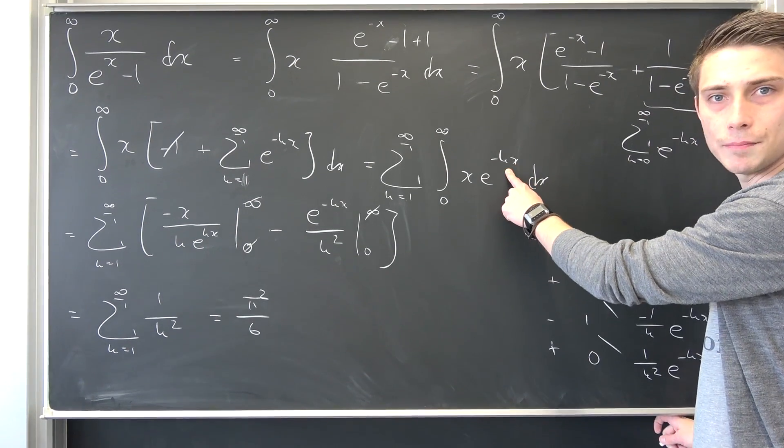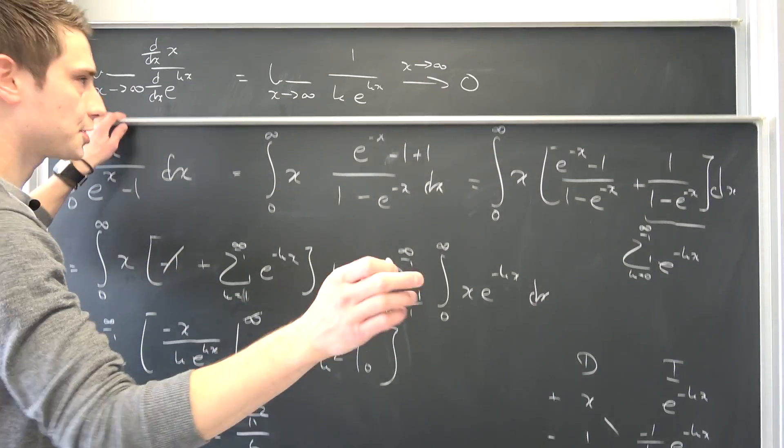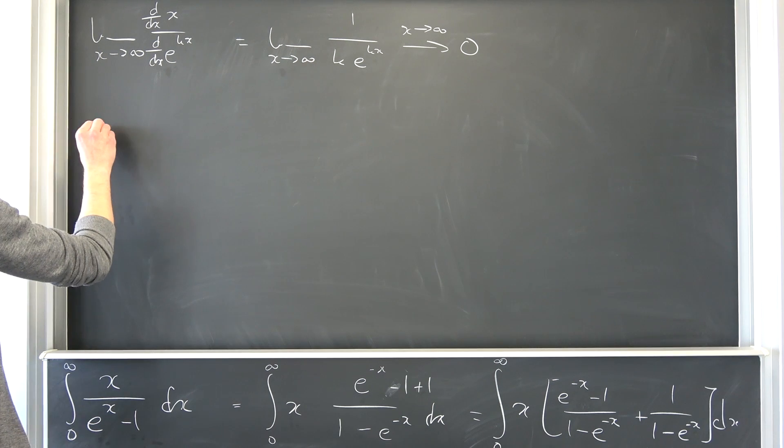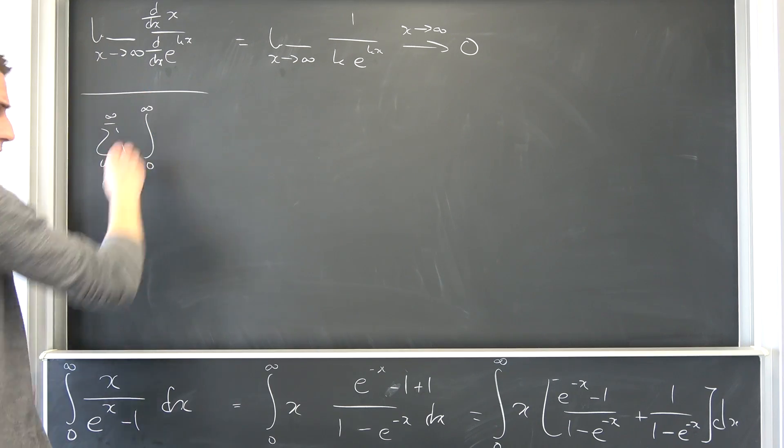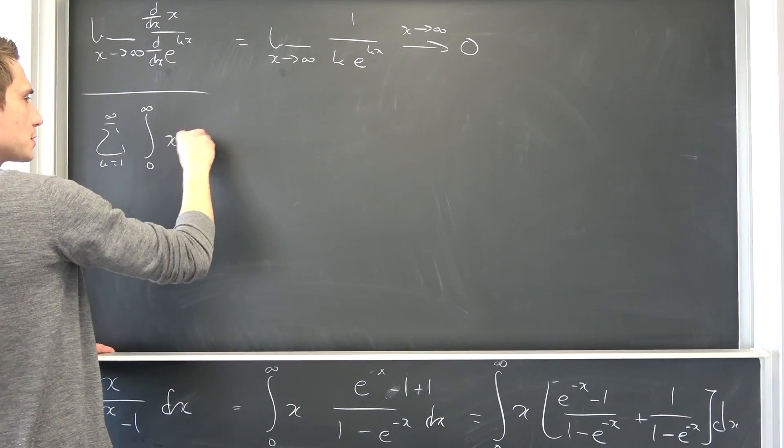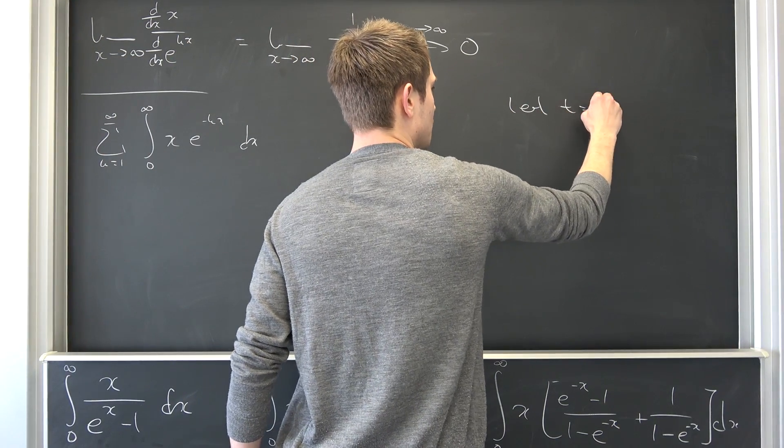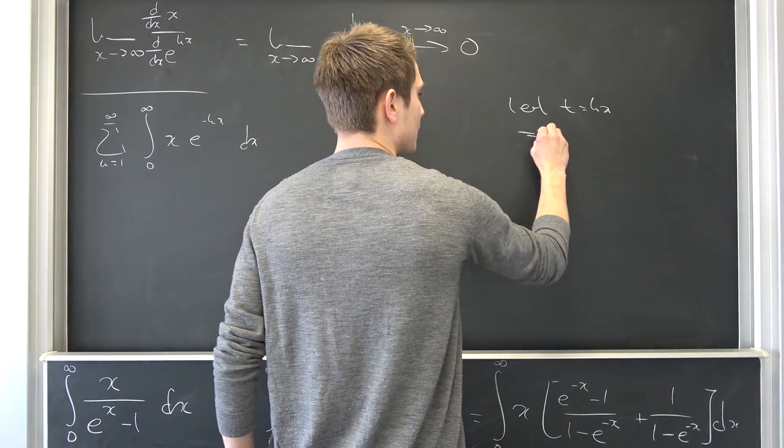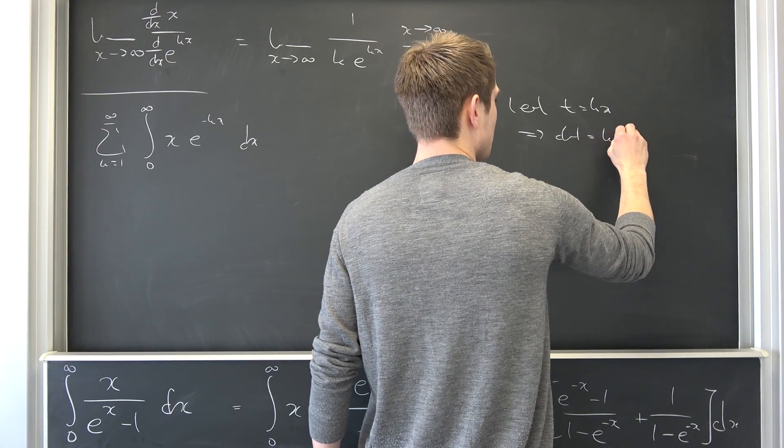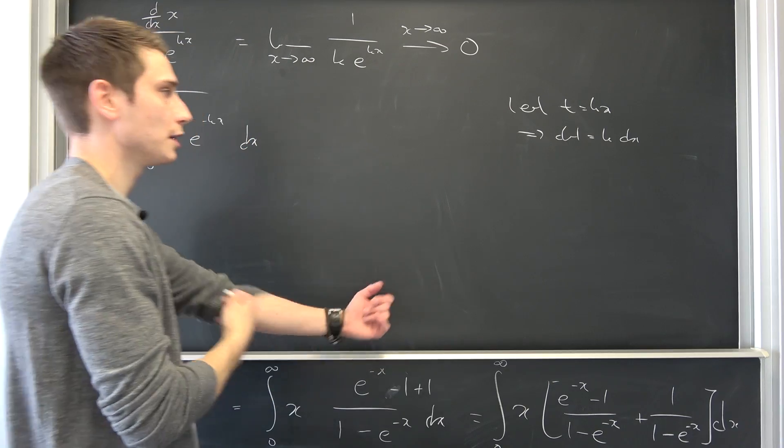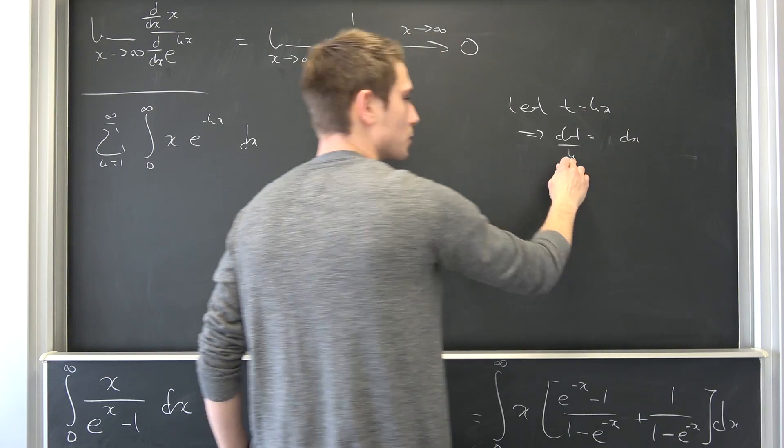What you can do, you can actually make a little change of variable right here. Let's just take a look at this real quick. So we are going to have sum running from k equals to 1 to infinity, integral from 0 to infinity of x times e to negative kx dx. What we can do, let t be equal to k times x, also meaning that dt is nothing but k times dx. k is just a positive integer, not starting at 0. So we can divide both sides by k.